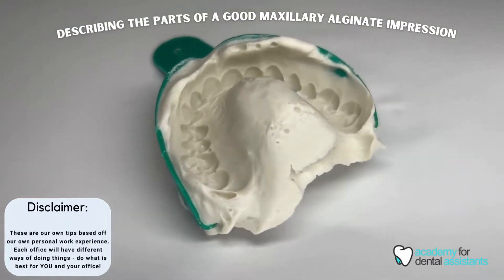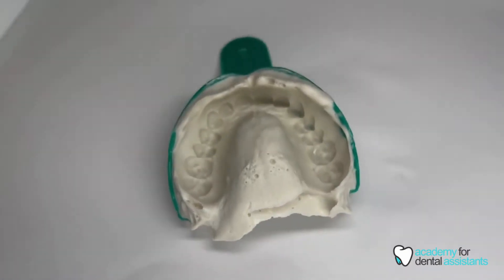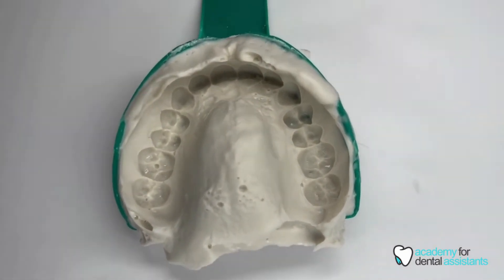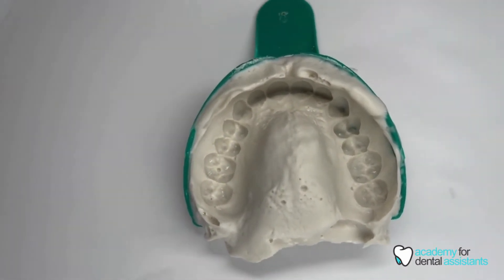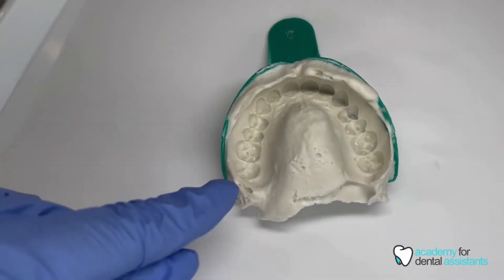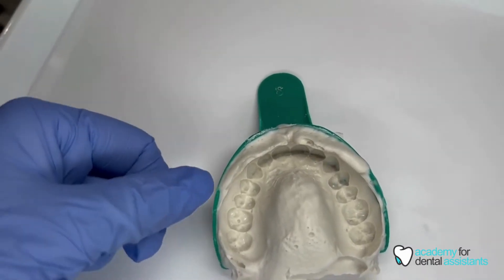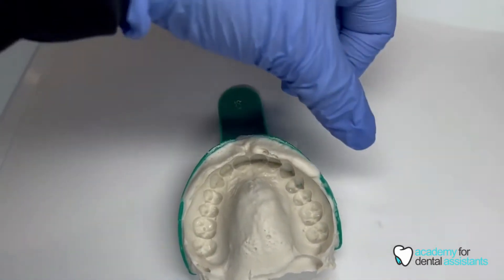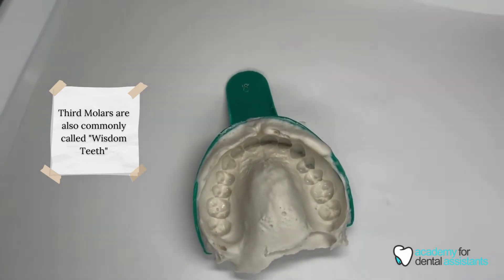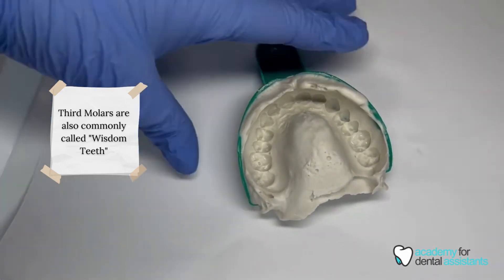This is an example of what a good impression will look like. As you can tell, if you look at these teeth, this patient has already had their third molars extracted. You can see in the upper right as well as the upper left quadrant that there are two molars on both sides. This patient has had them extracted — they're also known as wisdom teeth.